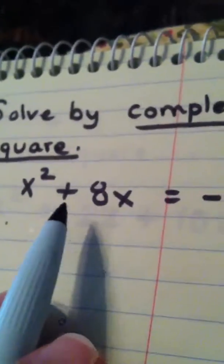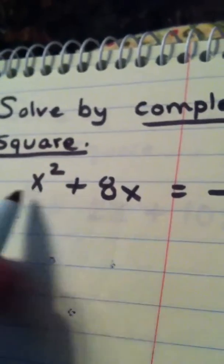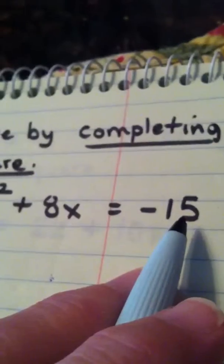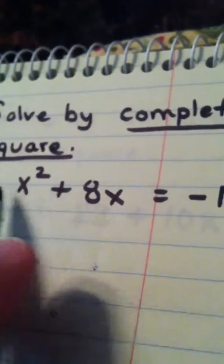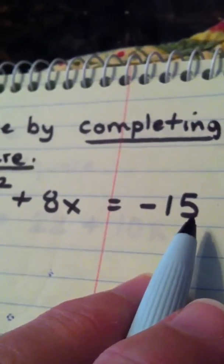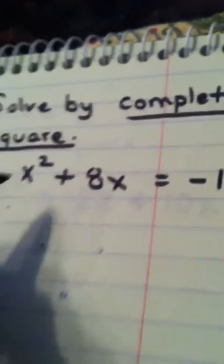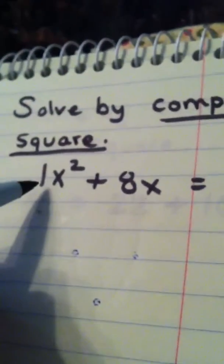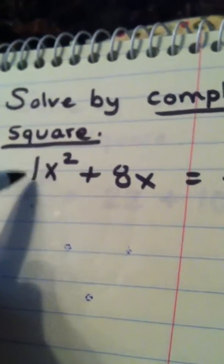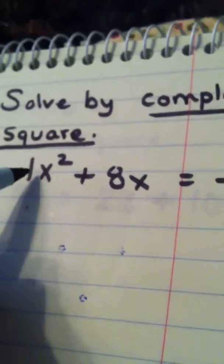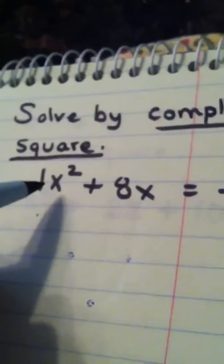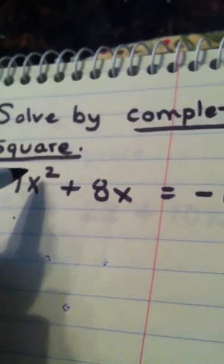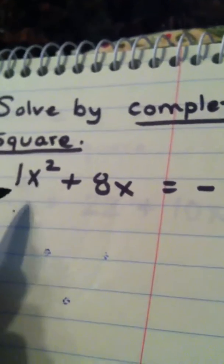Step one, when you're completing the square, you want to get all your variables alone and your constants alone — variables are on the left, constants are on the right. The next thing you want to do is make sure the leading coefficient is a 1, which it is. If this number were not a 1 — let's pretend this were a 3 — we would divide everything by 3. So, variables are alone, leading coefficient is a 1.